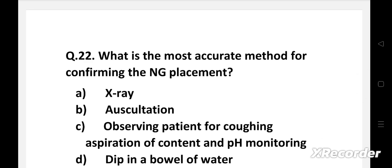Question 22: What is the most accurate method for confirming the NG placement? Option A: X-ray, B: auscultation, C: observing patient for coughing aspiration of content and pH monitoring, D: dip in a bowl of water.